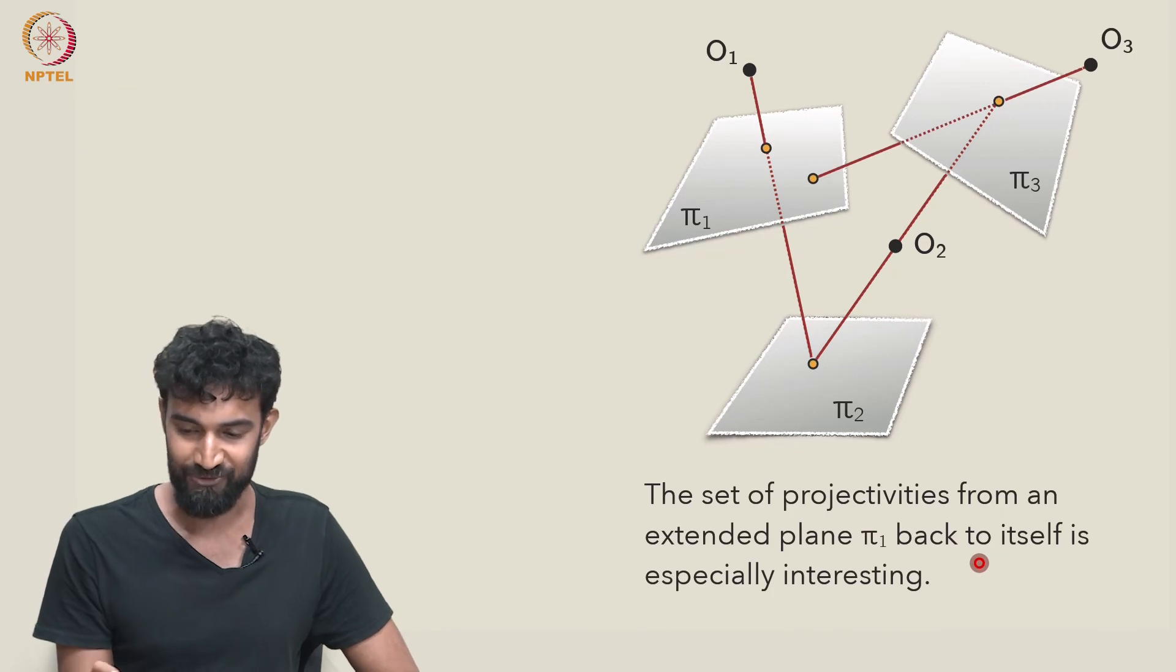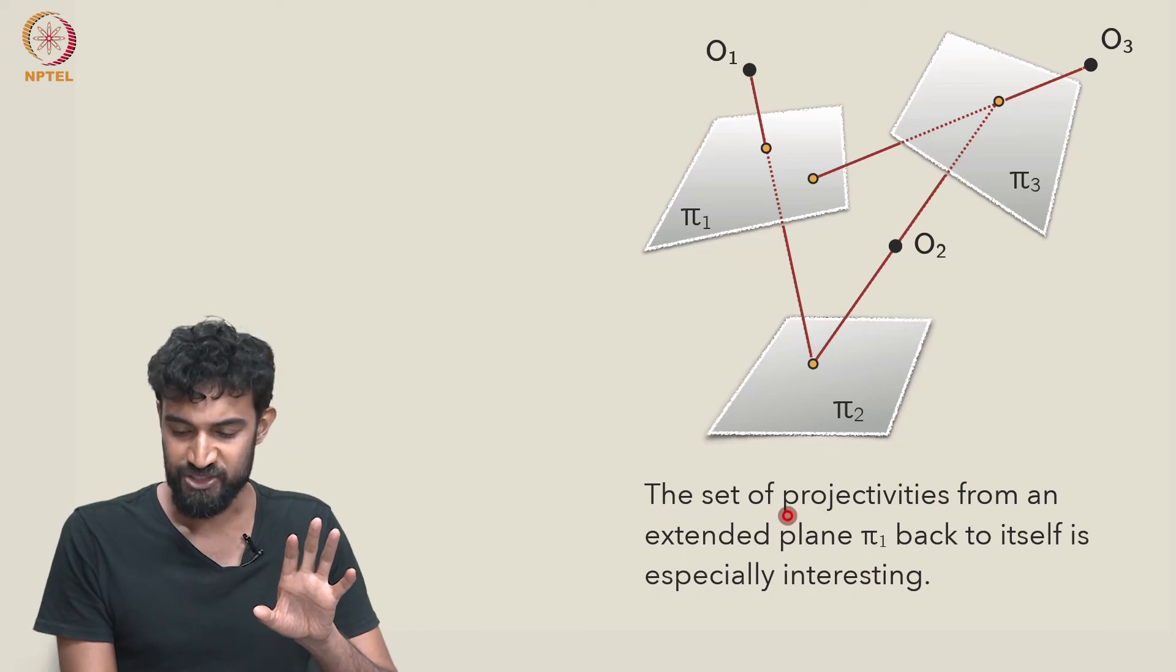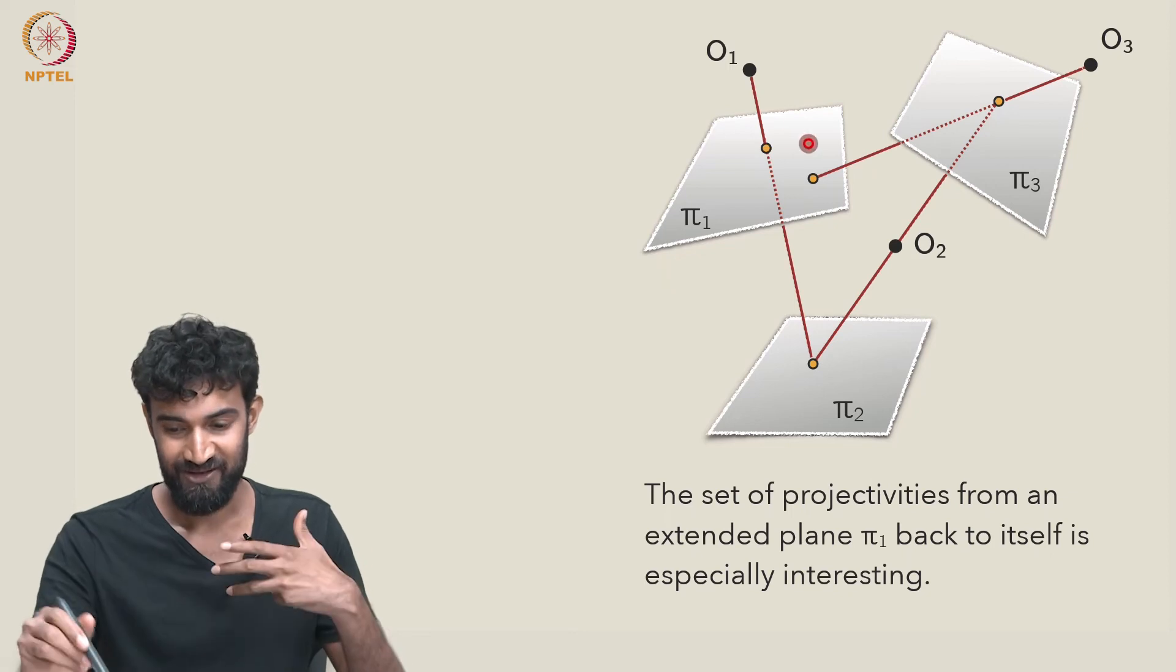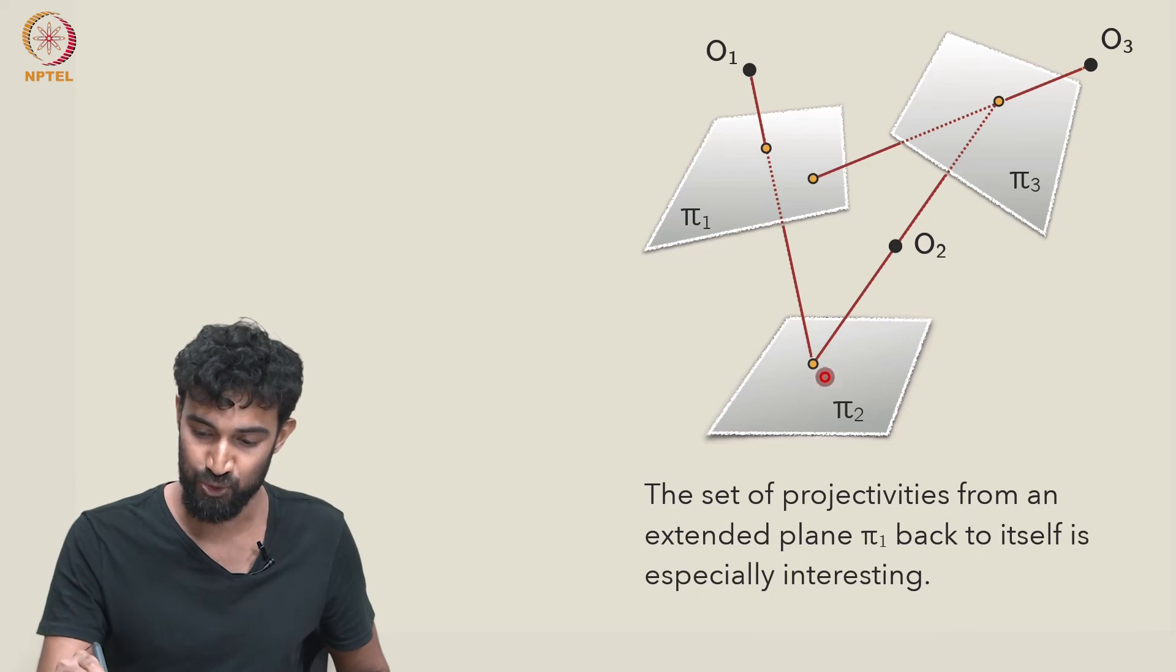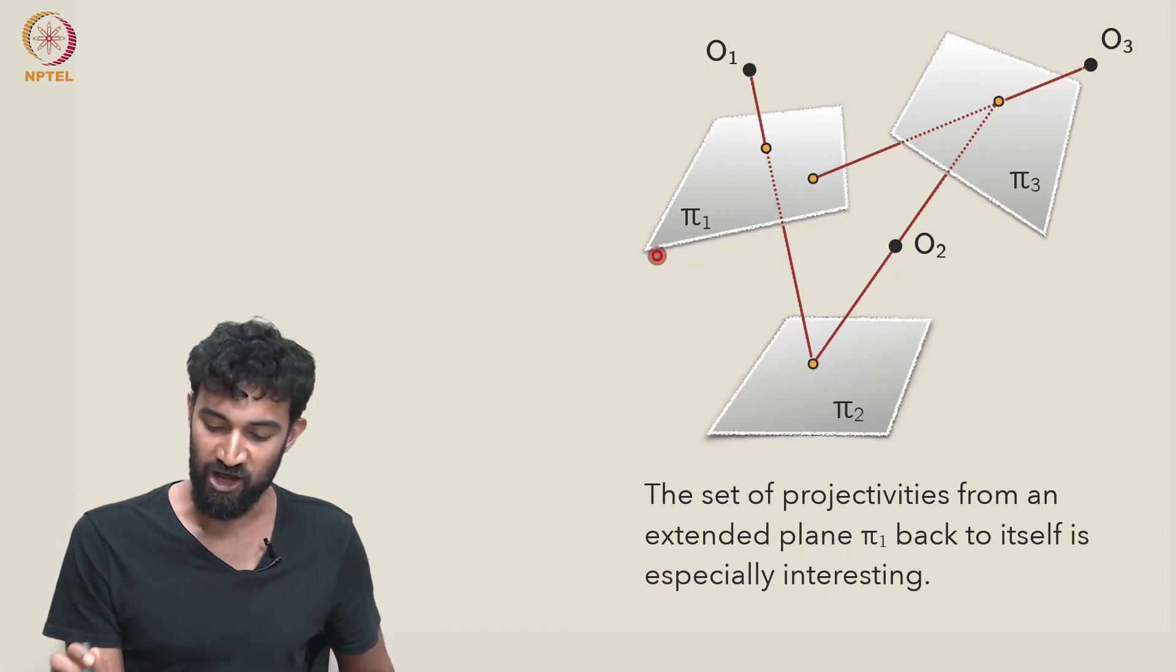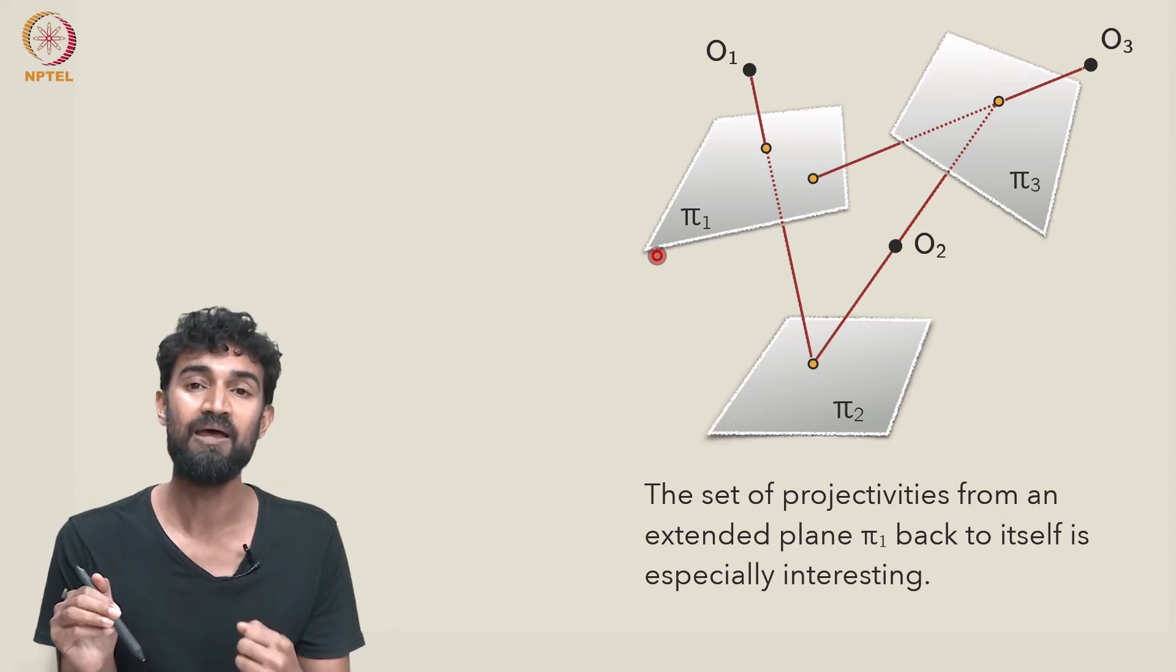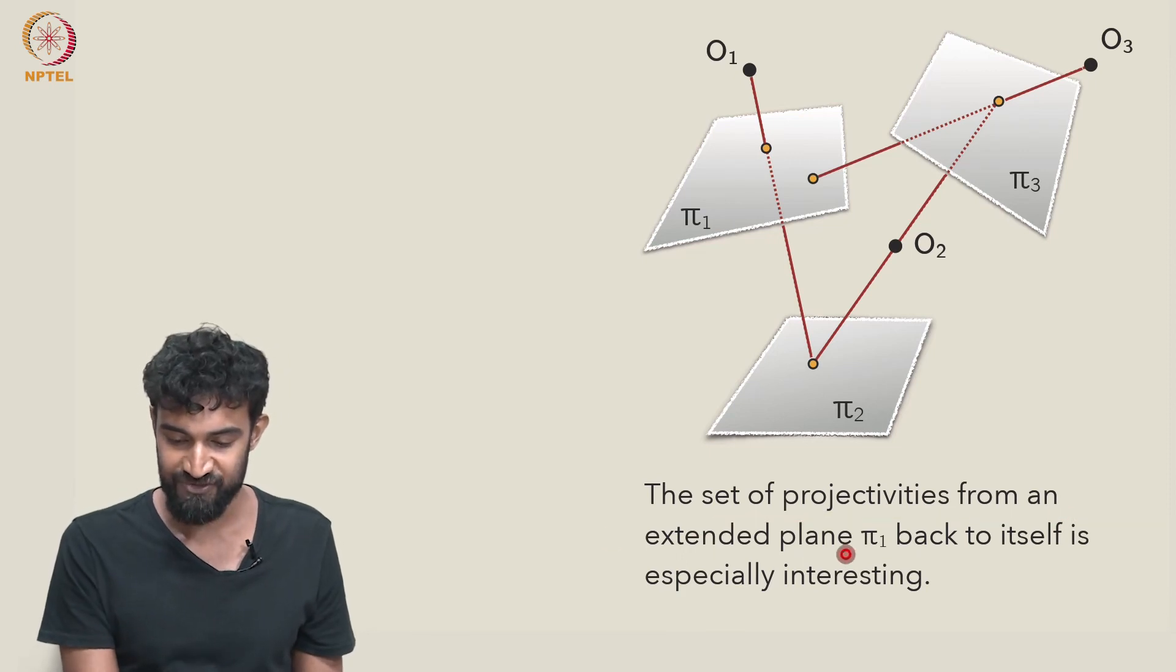Now, let's look at a different example, because this is a very special, important example that is going to keep coming up, which is projectivities from a plane π₁ back to itself. So in some sense it's circular, we're looking at a perspectivity from π₁ to π₂, a perspectivity from π₂ to π₃, but then a perspectivity back from π₃ back to π₁. So the composition of three perspectivities in this case gives us a map from π₁ to π₁. It's a transformation of π₁. So the set of projectivities from π₁ to itself is especially interesting.